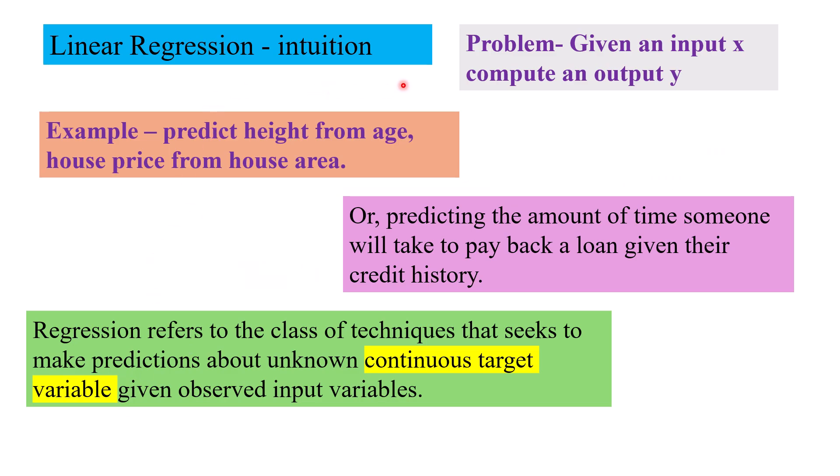As an intuition, suppose you are given an input x and we want the output y. Say you have to predict the height of a child from the age or the price of a house from the area, or the amount of time someone will take to pay back a loan given their credit history.